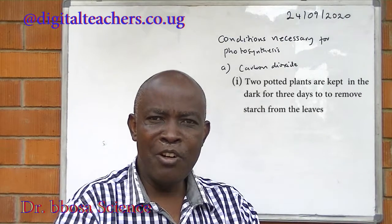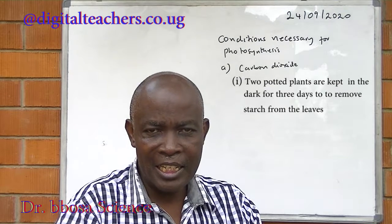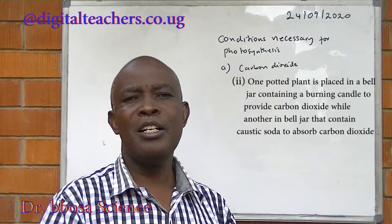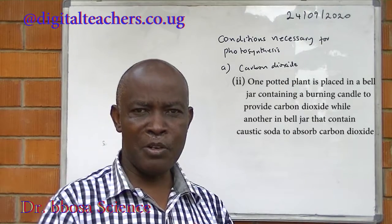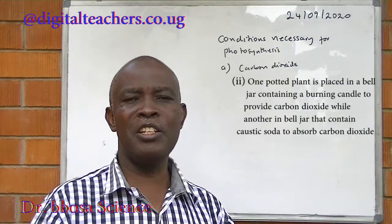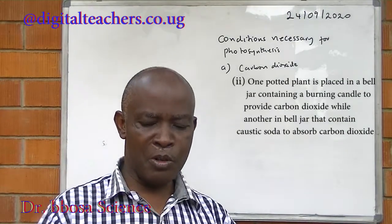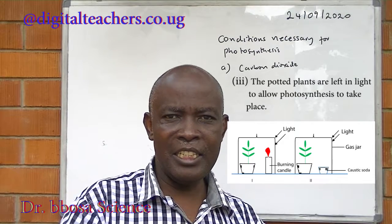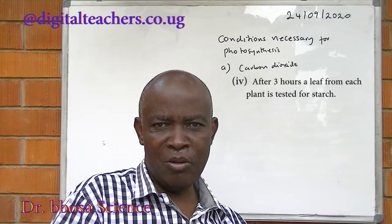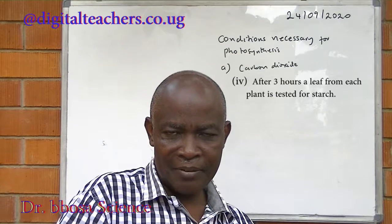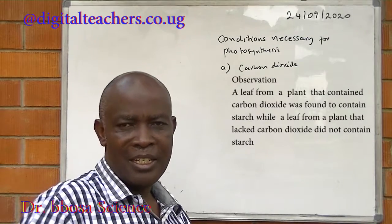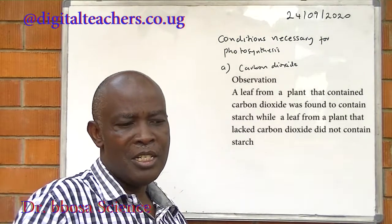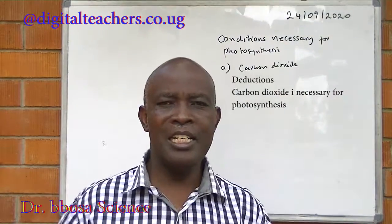A leaf from each plant is tested for the presence of starch, and the starch must be absent. One of the potted plants is put in a bell jar where there is a burning candle to provide carbon dioxide. Another one is enclosed in a bell jar containing sodium oxide to absorb carbon dioxide. The two potted plants are left in light for three hours to allow photosynthesis to take place. After three hours, a leaf from each plant is tested for presence of starch. A leaf from the plant where there was carbon dioxide is found to contain starch, indicating that carbon dioxide is necessary for photosynthesis.